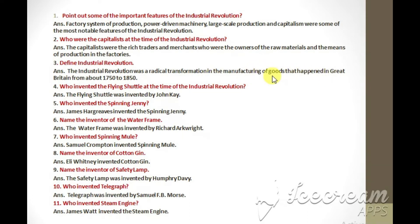Define Industrial Revolution. The Industrial Revolution was a radical transformation in the manufacturing of goods that happened in Great Britain from about 1750 to 1850.